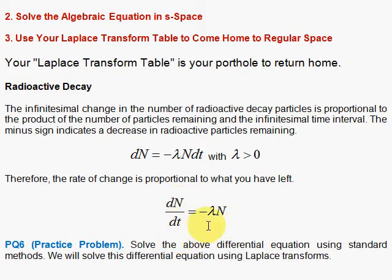So you can work this problem out very easily using the regular techniques. You bring the N over here and you bring the dt over there. You'll have the natural log of N and you'll have a minus lambda t, and when you exponentiate both sides, you'll get N(t) equals some constant initial value number of particles times e to the minus lambda t. But we're going to do that using Laplace transforms.